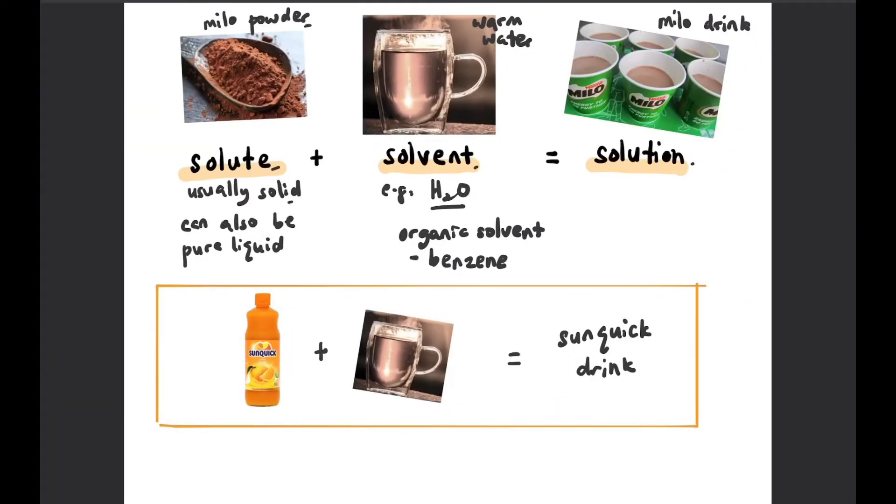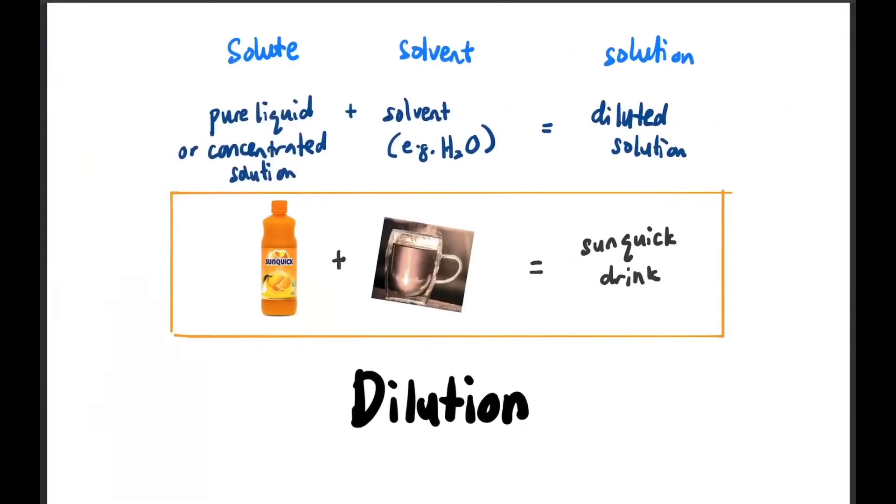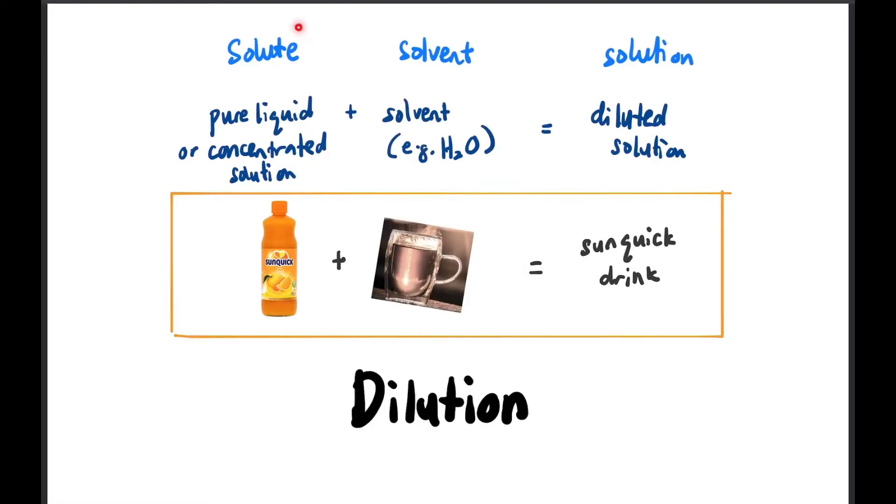Remember when I told you about how a solute can also be a pure liquid such as Sunquick and dissolve in a solvent like water? Actually it is called a process of dilution where the solute is a pure liquid or a concentrated solution and the solvent is usually water and they become a diluted solution.